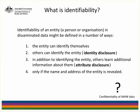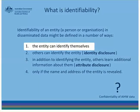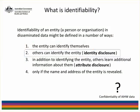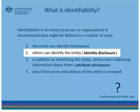Identifiability of an entity — that is, a person or organisation — in disseminated data might be defined in a number of ways. The first way is that the entity can identify themselves. This is a very stringent definition and would lead to very little data being able to be disseminated. The second possible definition is that others can identify the entity, often referred to as identity disclosure.